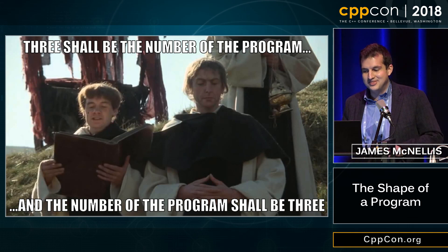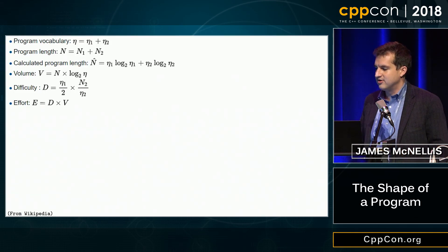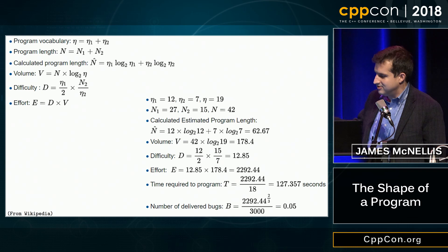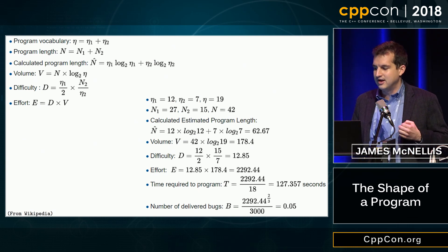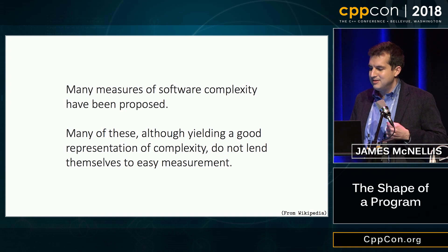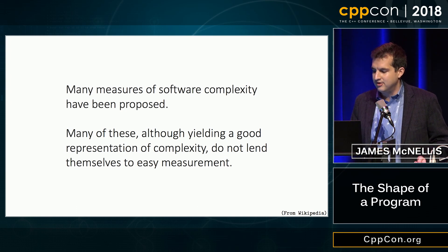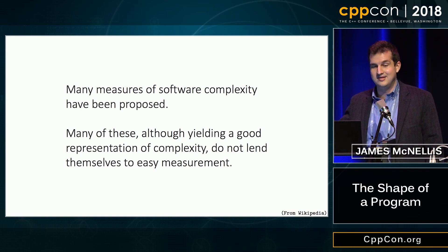But cyclomatic complexity is not the only option. There's also the Halstead complexity metric where you do some math, and then — I mean — you do some more math, and I don't actually know what's going on here. This is all too much for me to think about during code review. So I went to a Wikipedia page for programming complexity, and it says: 'Many measures of software complexity have been proposed. Many of these, although yielding a good representation of complexity, do not lend themselves to easy measurement.' Well, that's for sure.